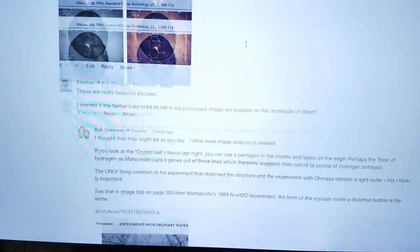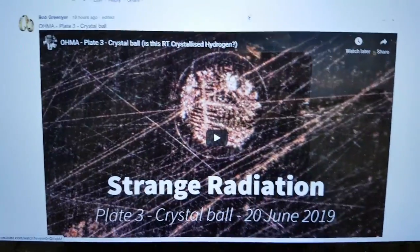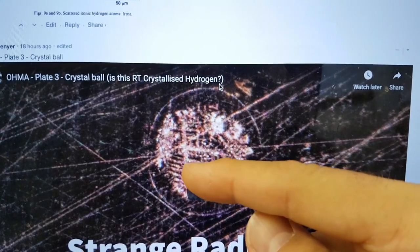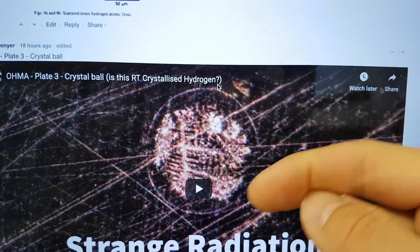The other thing that we saw yesterday on the other side of plate three was this crystallization. You've got the ring and then you can see the pentagon.